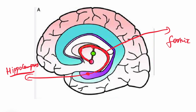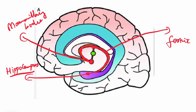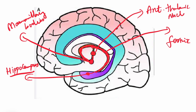Through the fornix it will go to the hypothalamus — specifically to the mammillary bodies. If you remember, the mammillary bodies are part of the hypothalamus. From the mammillary bodies, through the mammillothalamic tract, it will go to the anterior thalamic nuclei in the thalamus.